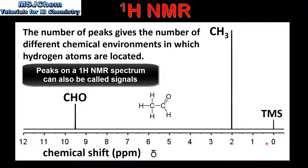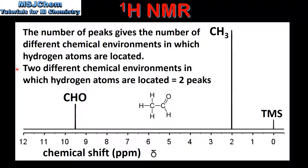The peak at 0 ppm is for TMS, which is tetramethylsilane. TMS is assigned a chemical shift of 0 ppm and the chemical shift of all other peaks are measured relative to this peak. So if we ignore the peak at 0 ppm, we can see that we have one peak at about 2 ppm and one peak at about 9.5 ppm. In ethanol there are two different chemical environments in which hydrogen atoms are located, which means we see two peaks on the NMR spectrum.